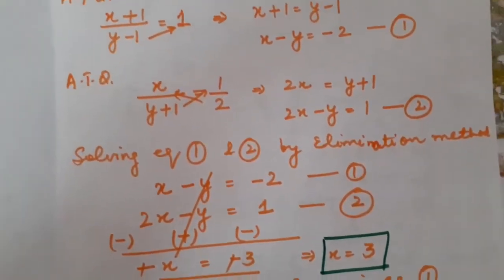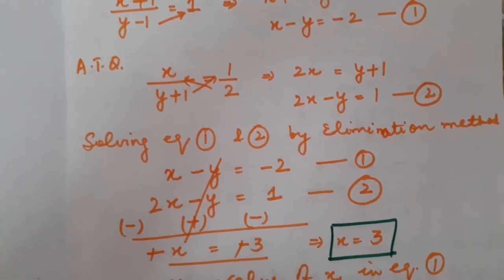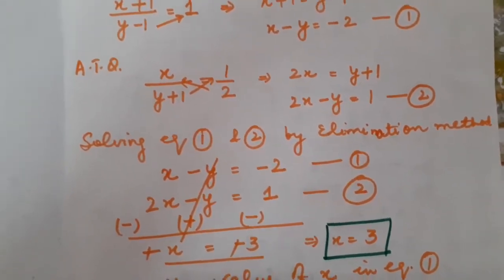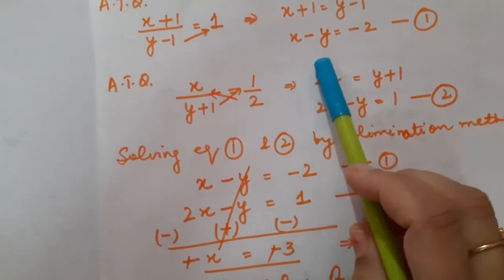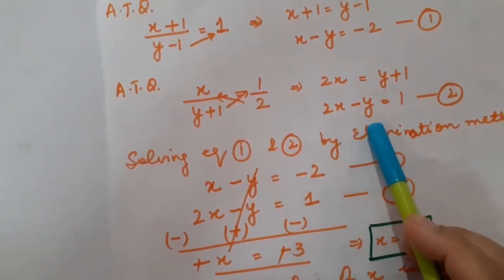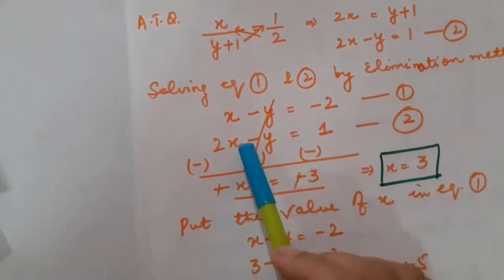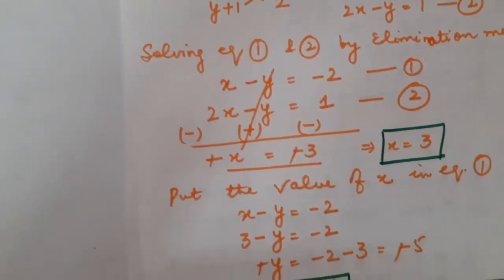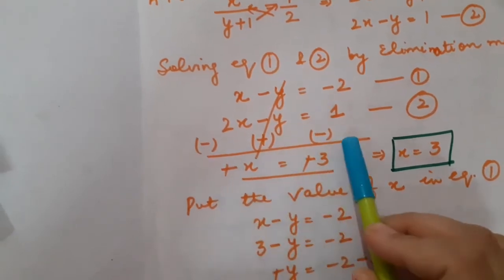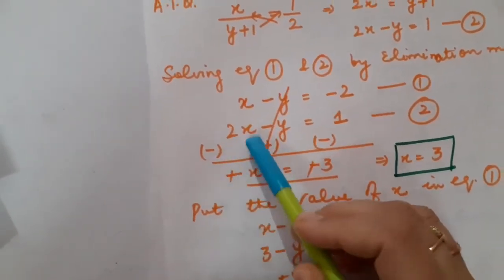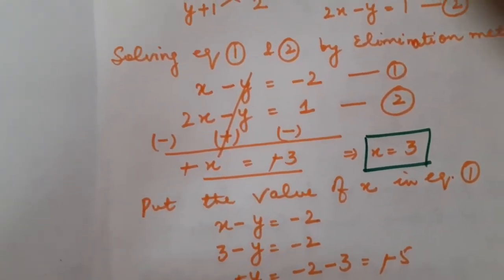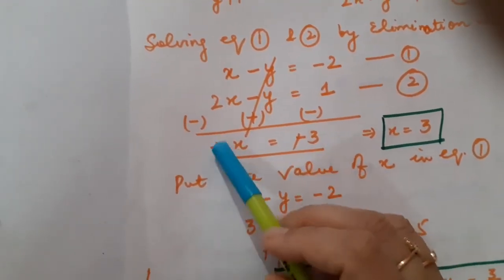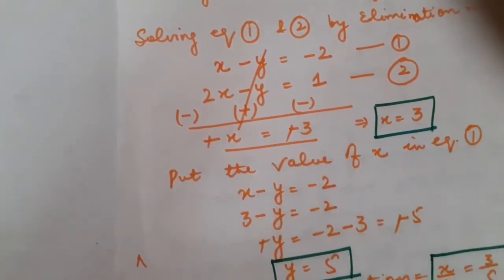Now how to solve both equations? You can see that the numerical coefficient of y is minus 1 in both equations. So I am just going to subtract them without multiplying by any value. Subtracting equation 1 from equation 2: the sign of the second expression changes. x minus 2x gives minus x, and minus 2 and plus 1 gives minus 3 — but cancelling both minus signs, x equals 3.